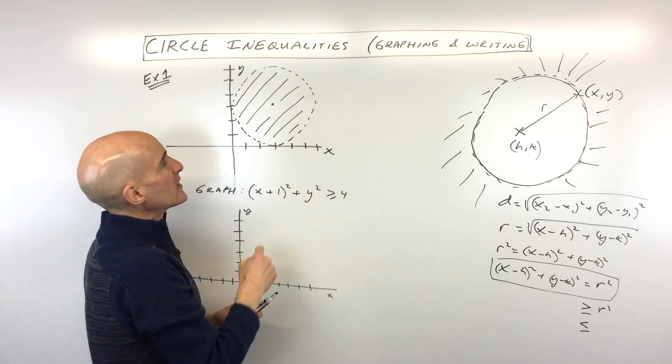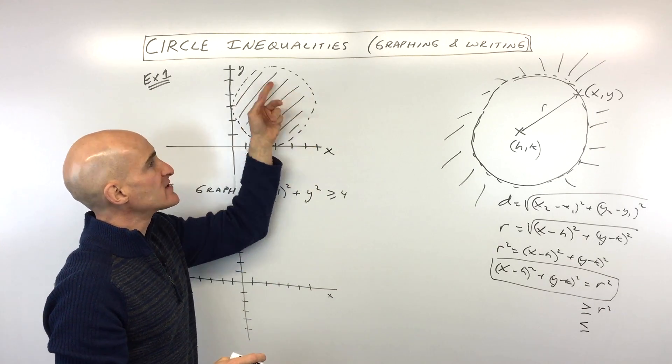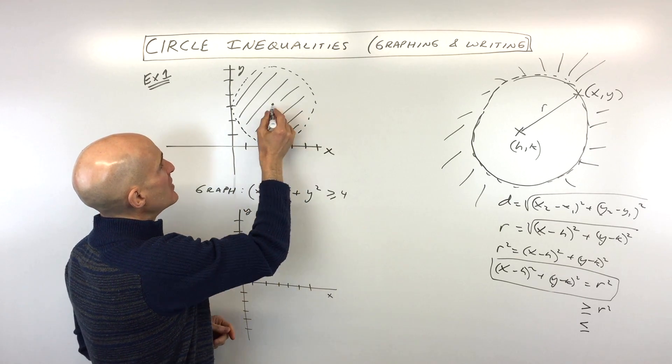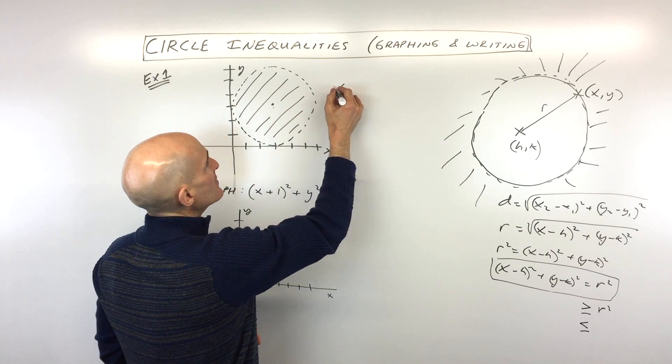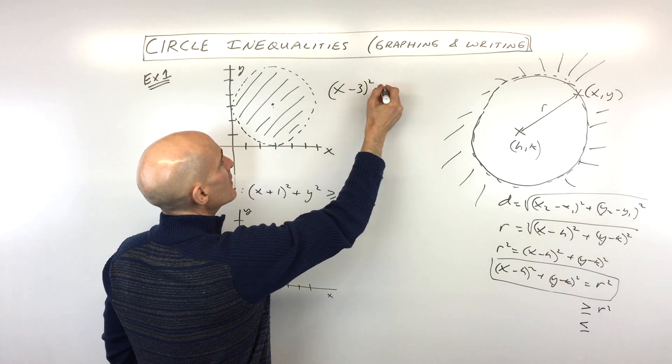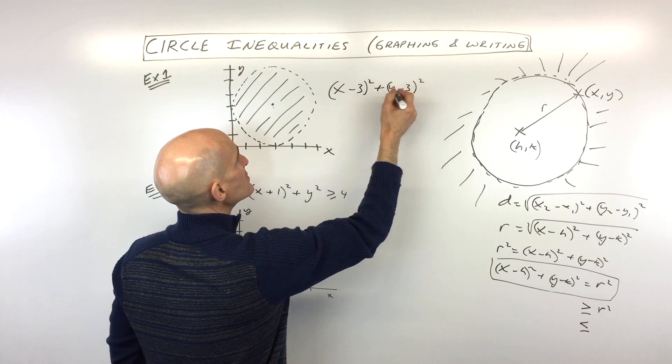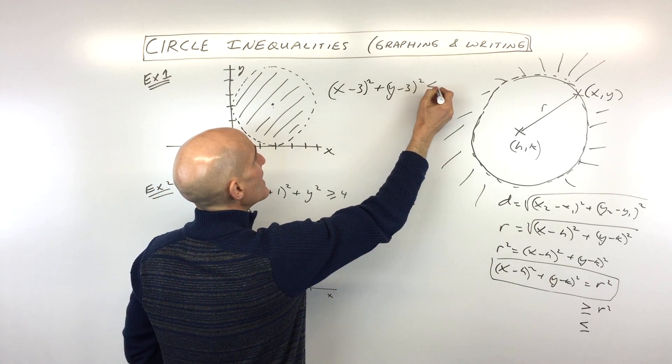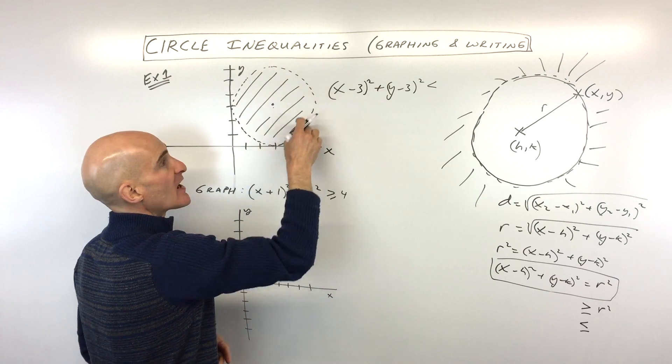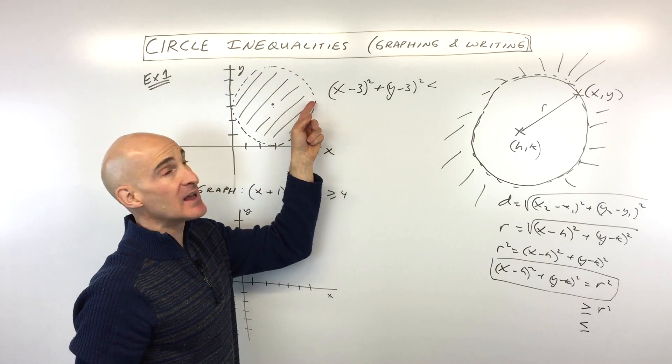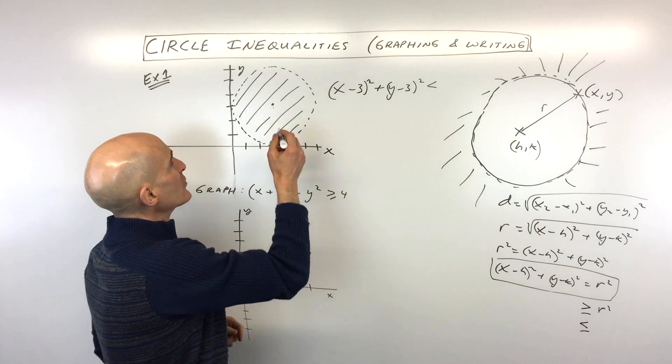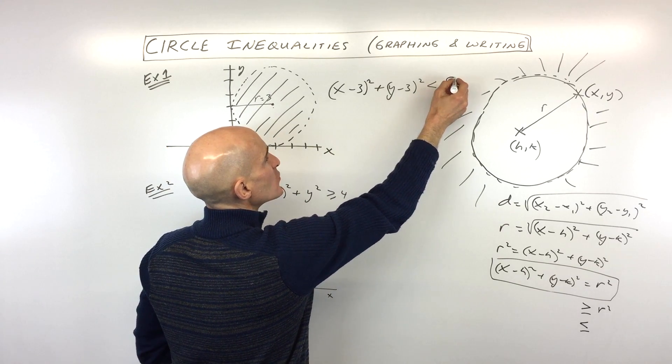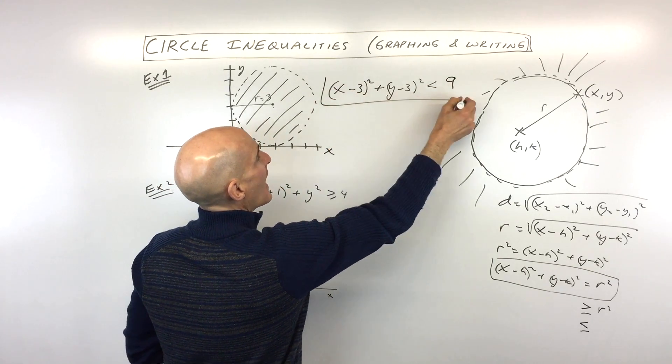How would you write the circle inequality for the set of points that are shaded here? Well, let's see, we can find the center, you can see the center point is going to be at 3 comma 3, so this is going to be x minus 3 squared plus y minus 3, the quantity squared. And since we're shading on the inside of the circle, this is going to be less than, not equal to, because you can see this is a dashed or dotted line for the circle, meaning it's not including the points on the circle. And then it looks like our radius here you can see is a radius of 3, but remember we want to square that, that's the radius squared, so it's going to be less than 9.